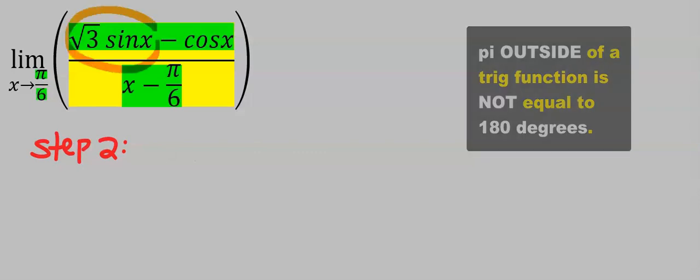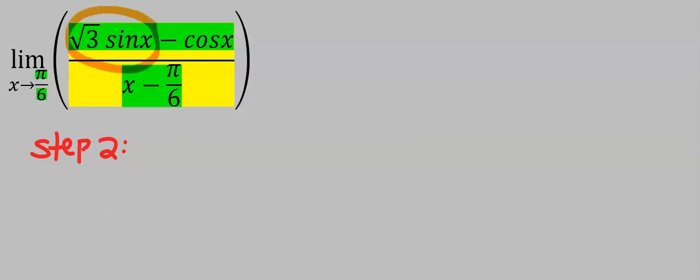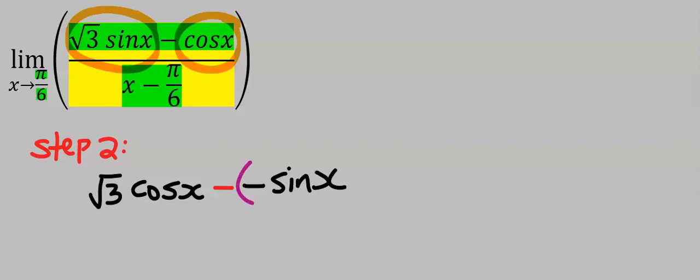Differentiate root 3 sine x and we have root 3 cos x. Next, differentiate cos x and we have minus sine x. This will be in a bracket. Next, differentiate x and you're going to get 1.